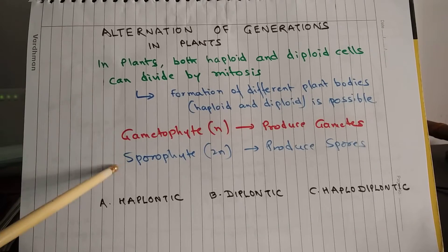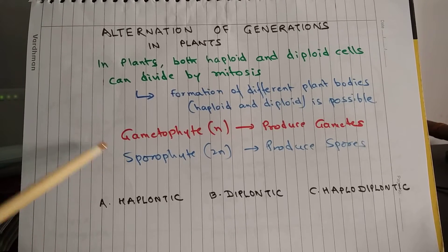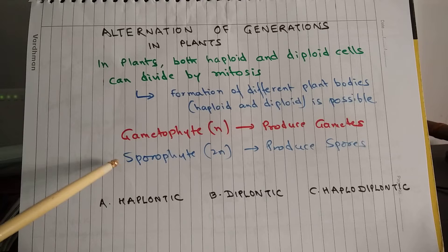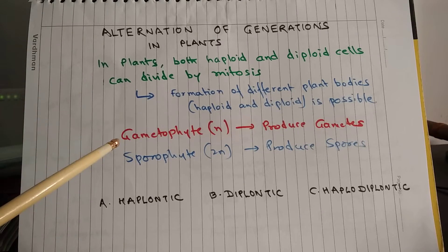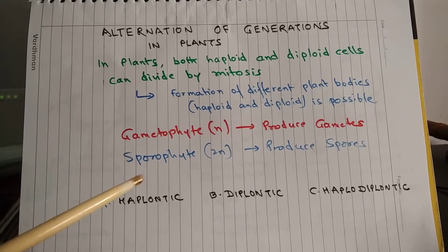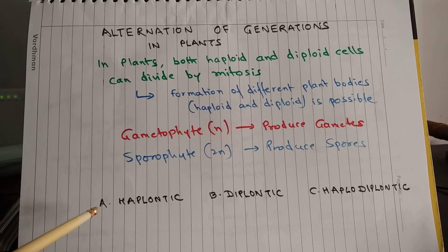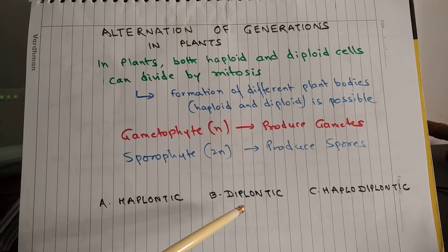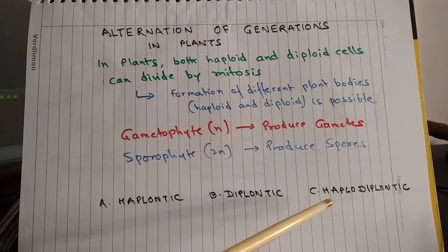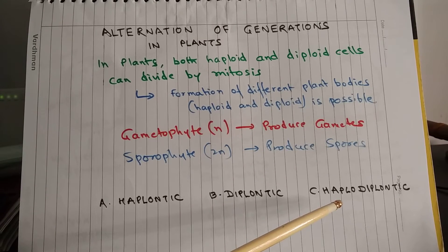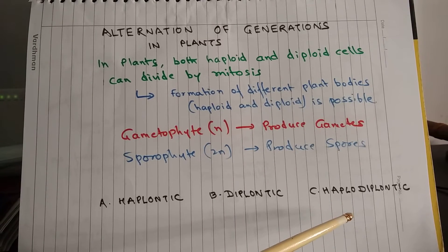Based on the relative length of gametophyte and sporophyte phase in plants, the alternation of generation in plants can be of three types: A is haplontic, B is diplontic, and C is haplodiplontic.